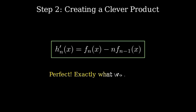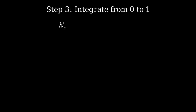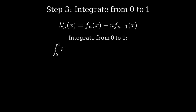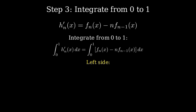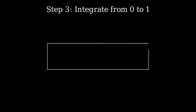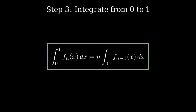Now let's integrate both sides from 0 to 1. By the fundamental theorem of calculus, the left side becomes h evaluated at 1 minus h at 0. At x = 1, we get 1 · (-ln 1)^n = 1 · 0^n = 0. At x approaching 0 from the right, x · (-ln x)^n also approaches 0 by L'Hôpital's rule. So the left side equals 0, giving us: the integral from 0 to 1 of f_n equals n times the integral from 0 to 1 of f_{n-1}. This is a recurrence relation.